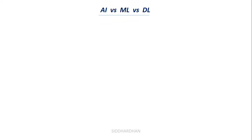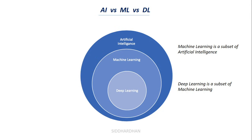There is a picture which clearly represents the relationship between these terms. As you can see in this Venn diagram, artificial intelligence is a broader field, machine learning is a subset of artificial intelligence, and deep learning is a further subset of machine learning. So this is the relationship between them — ML is a subset of AI and deep learning is a subset of ML.